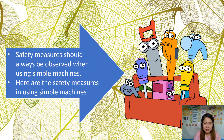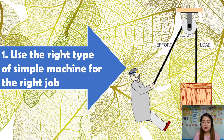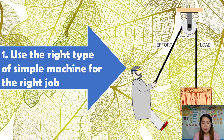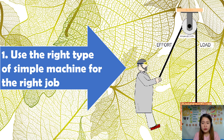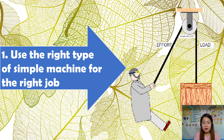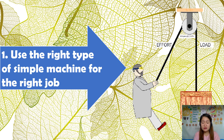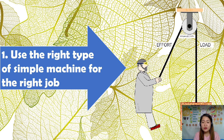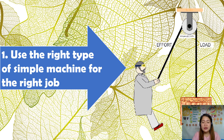Now let's discuss the safety measures of using simple machines. Safety measures should always be observed when using simple machines. The first safety measure is to use the right type of simple machine for the right job. It is very important because if you are not aware of what you are using, you may encounter some accident. If we need to carry a heavy load, there is the inclined plane, pulley, and wheel and axle which could help us do the work easier.